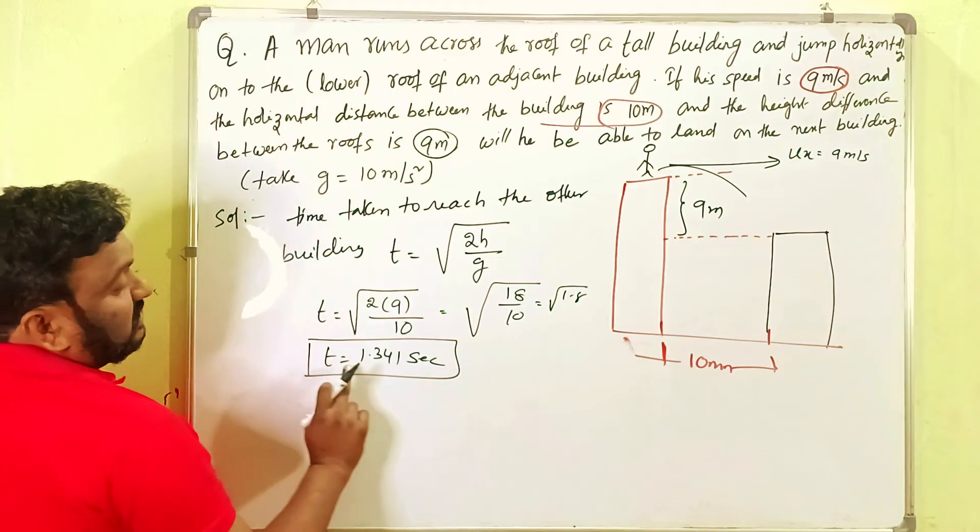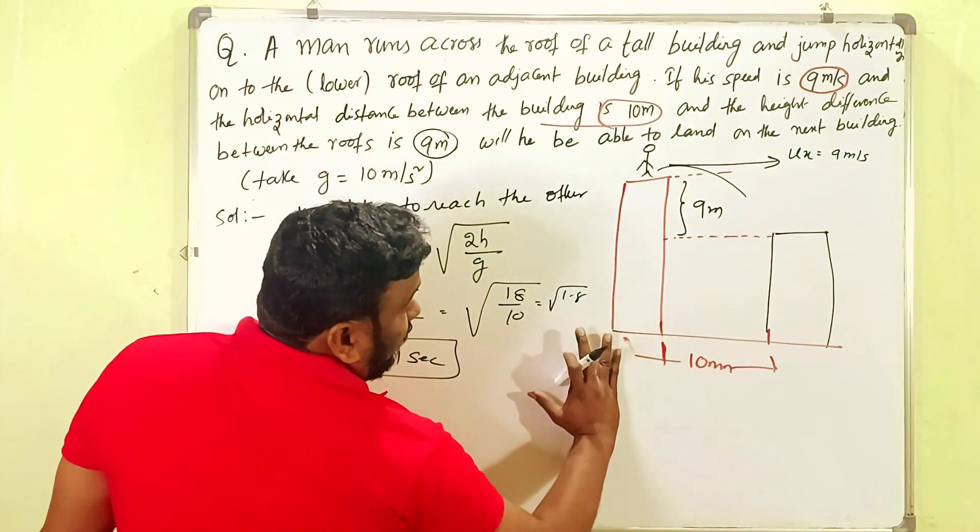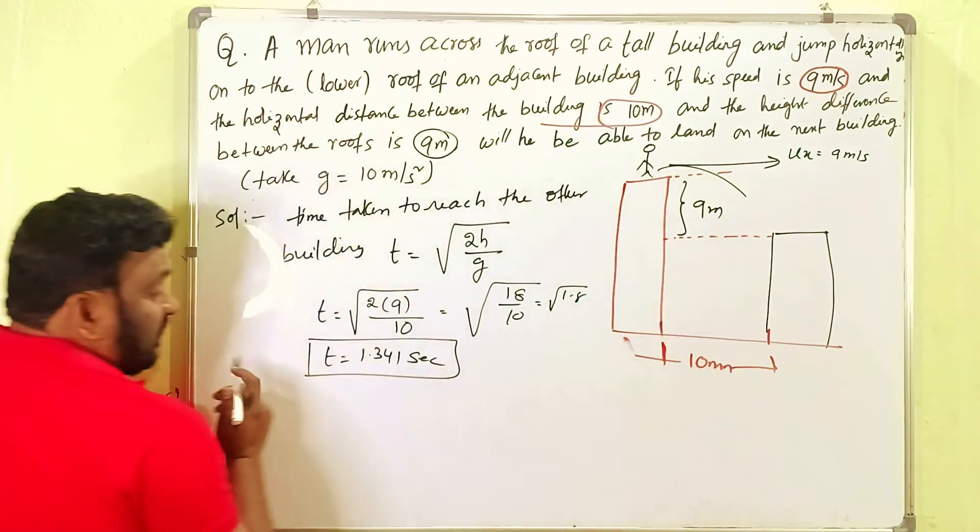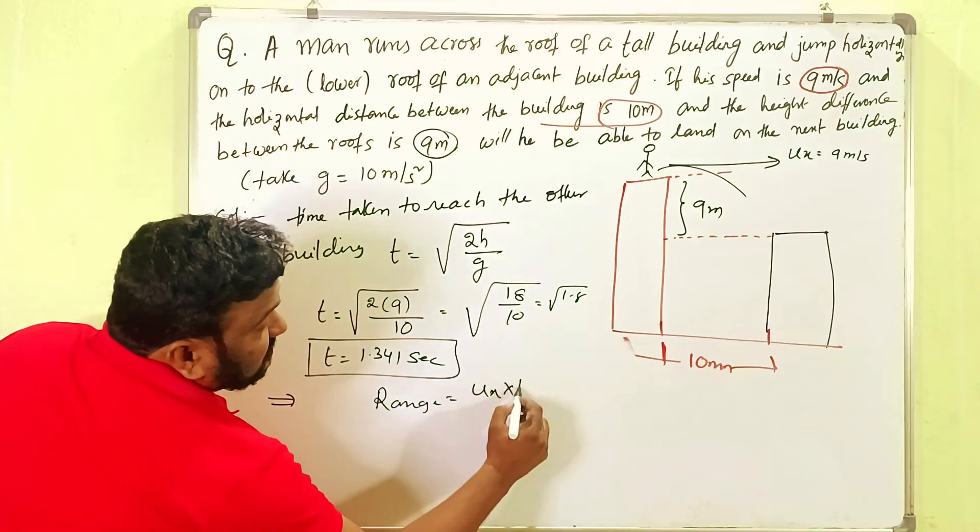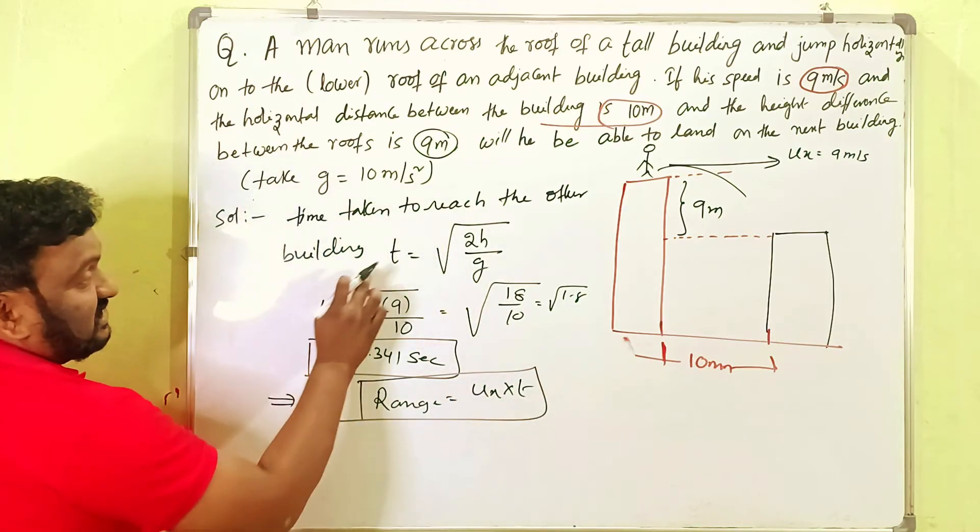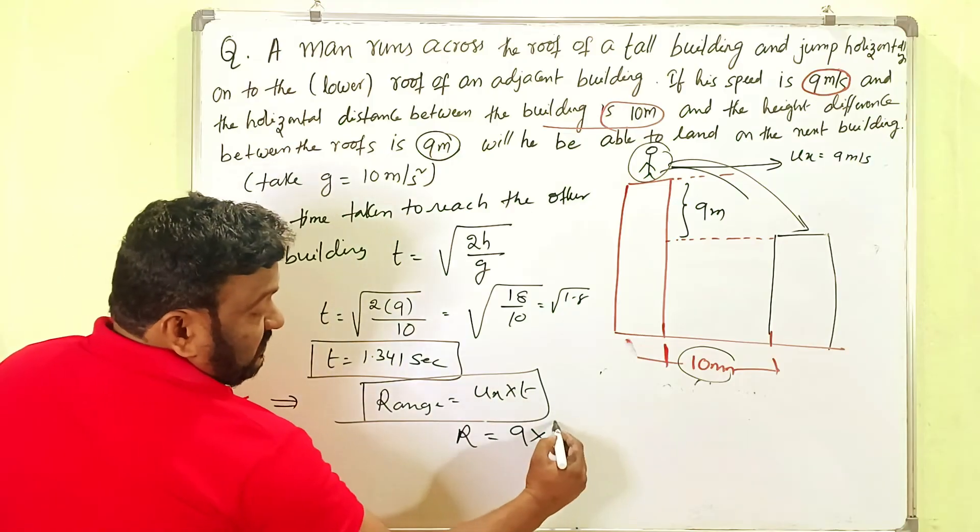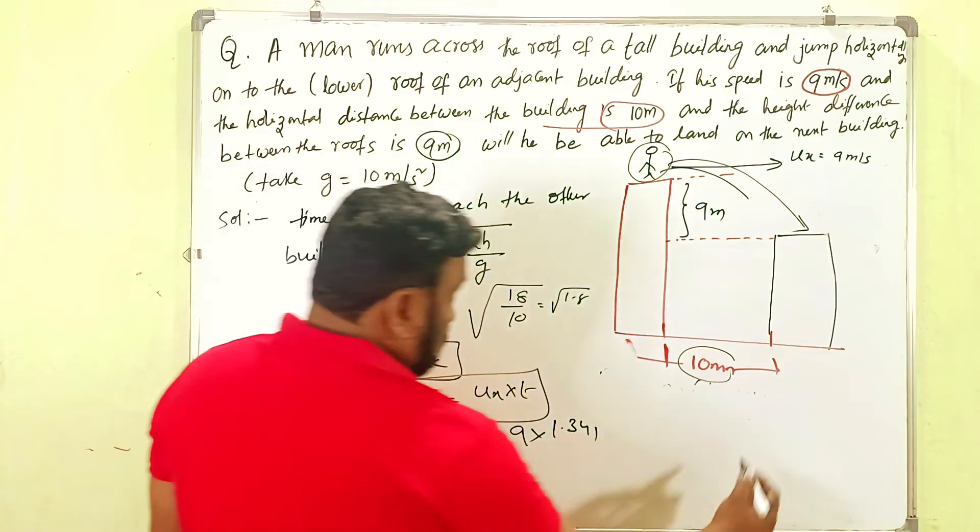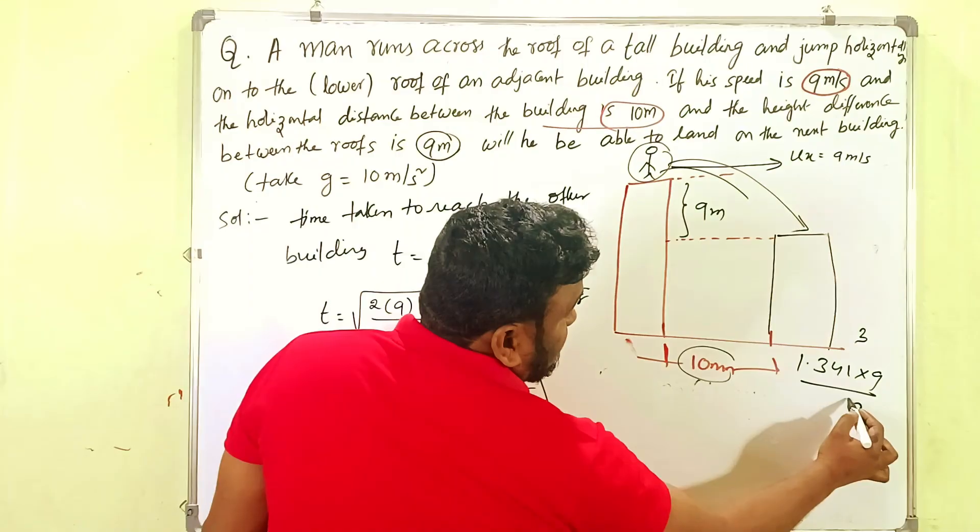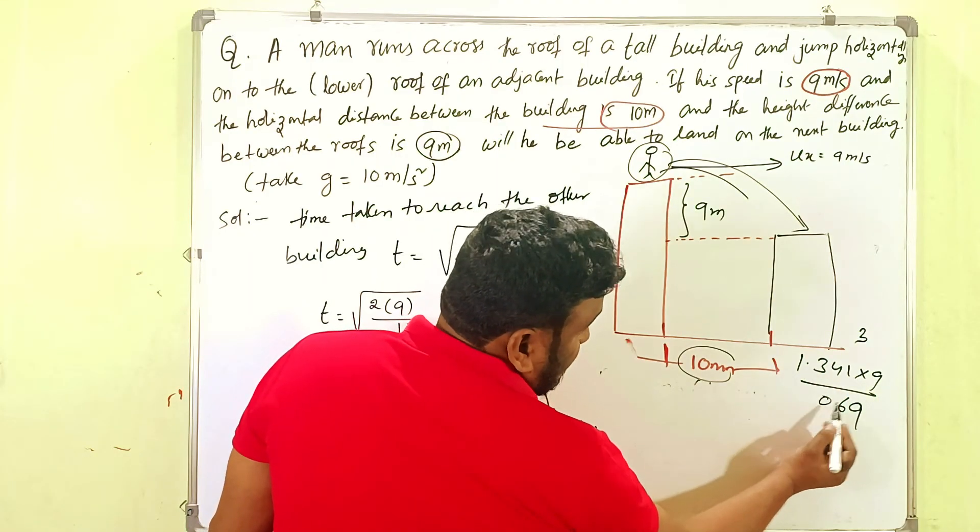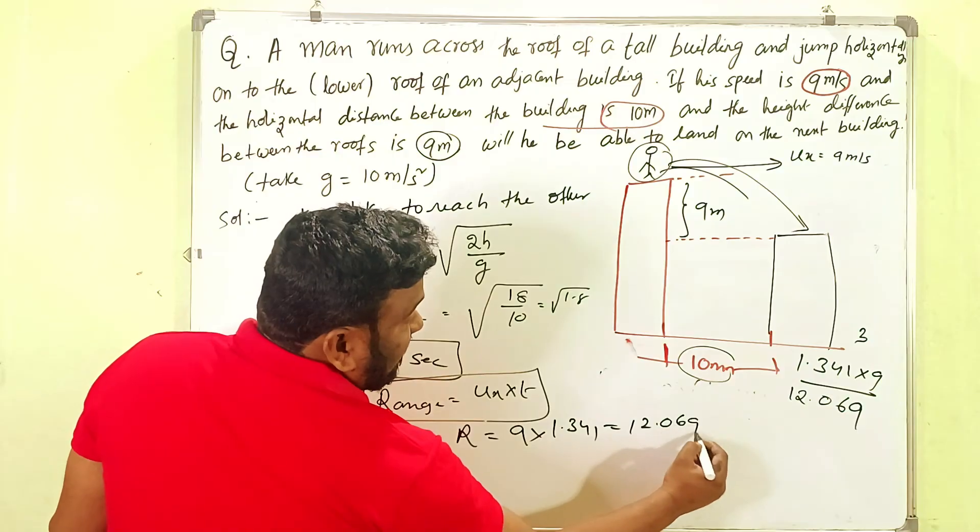Now the horizontal distance covered: the formula is range equals velocity times time, or time of flight. R equals 9 times 1.341 seconds. Multiplying these values: 9 times 1.341 gives us 12.069 meters.